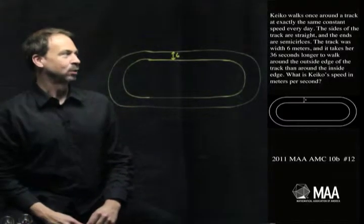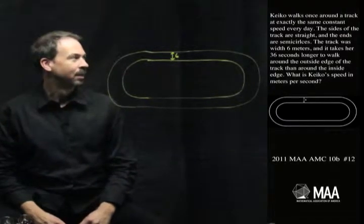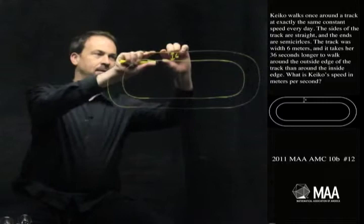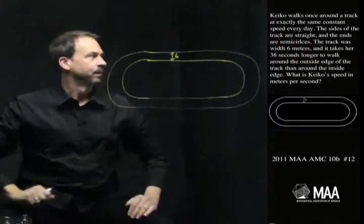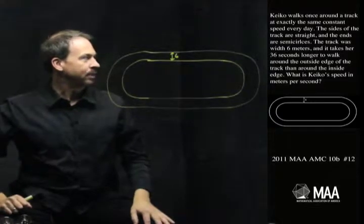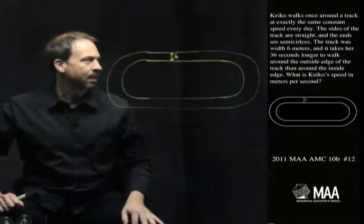Keiko walks once around a track at exactly the same constant speed every day. The sides of the track are straight and the ends are semi-circles. So I've got a picture here. The track has width 6 meters and it takes her 36 seconds longer to walk around the outside edge of the track than around the inside edge.